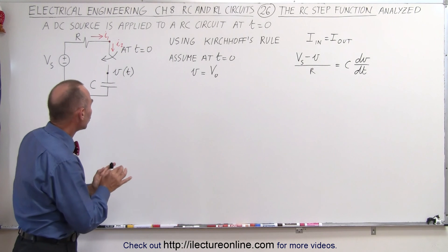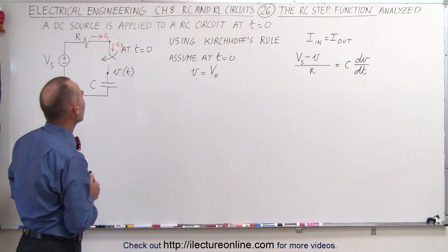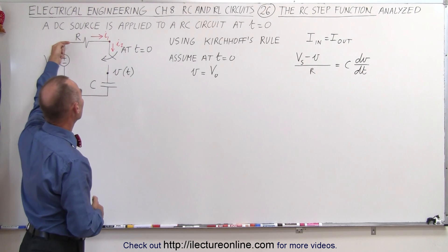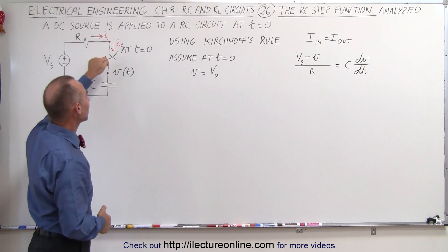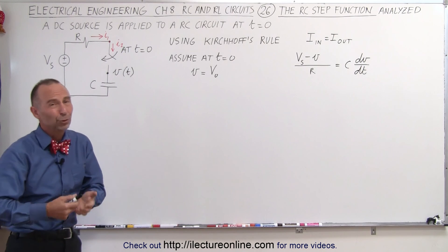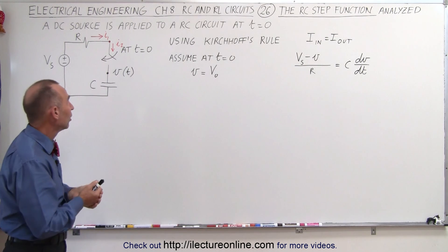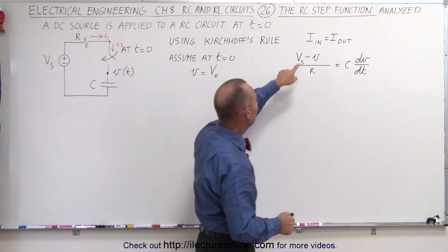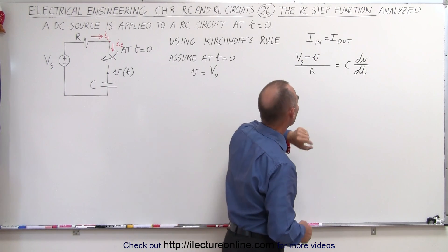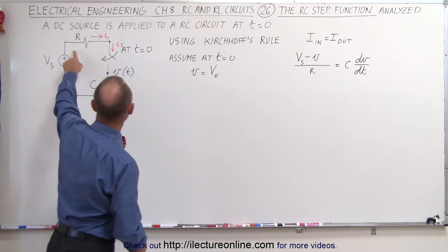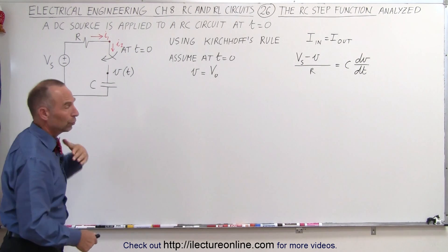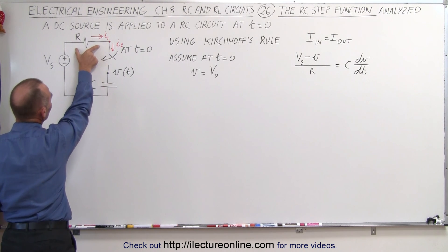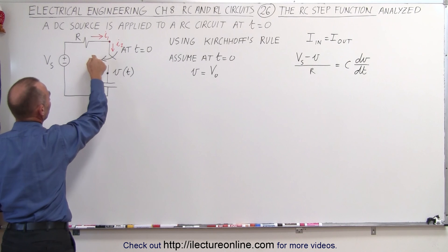We're going to use Kirchhoff's rule to determine how to come up with that equation. We're going to take a point on the circuit right there and say that the current flowing into that point equals the current leaving that point. Normally we use that for a branch, but here just taking a single point on the circuit will work as well. So the current in must equal the current out, and the current in is equal to the current across the resistor, which using Ohm's law is the voltage drop across the resistor divided by the resistance.